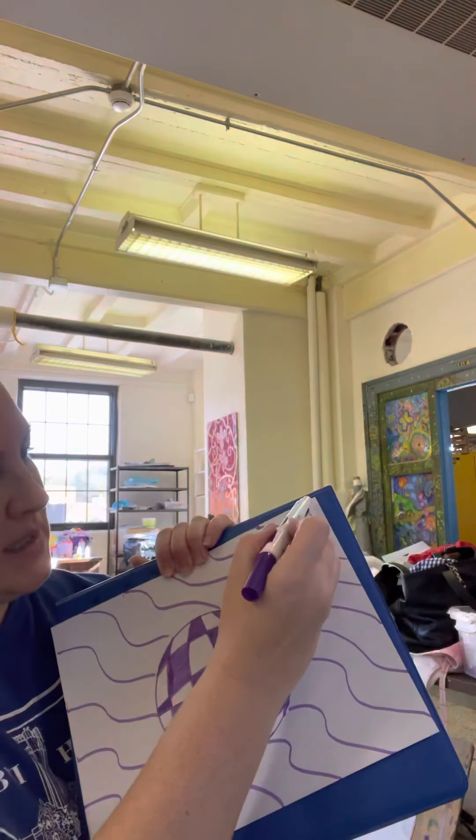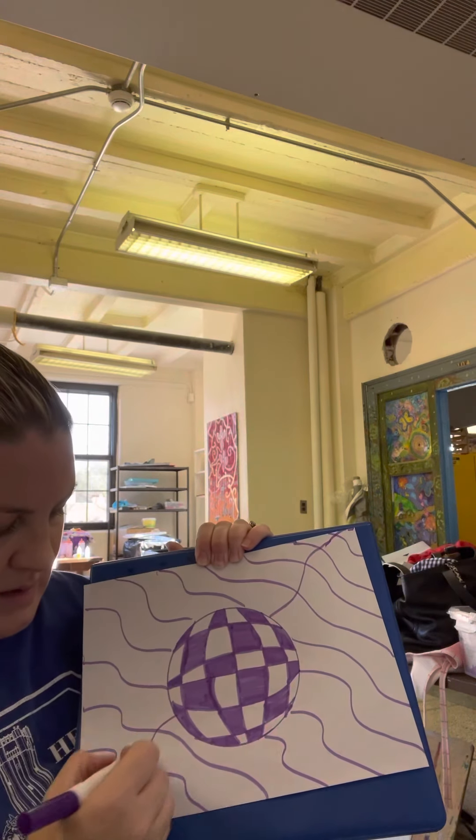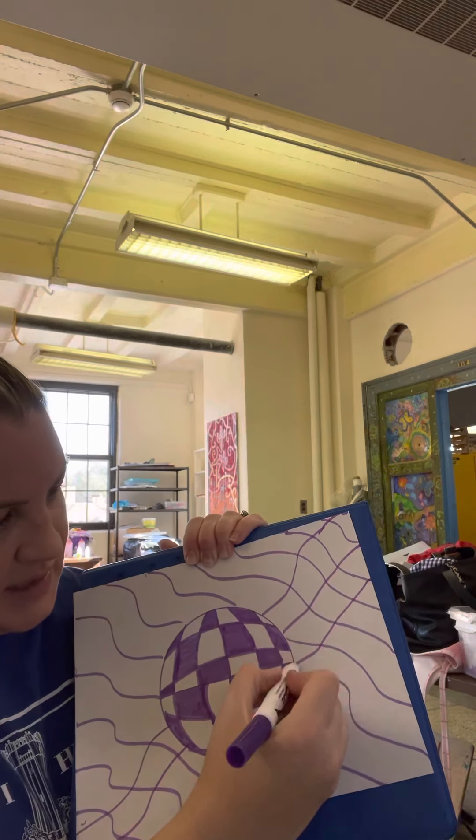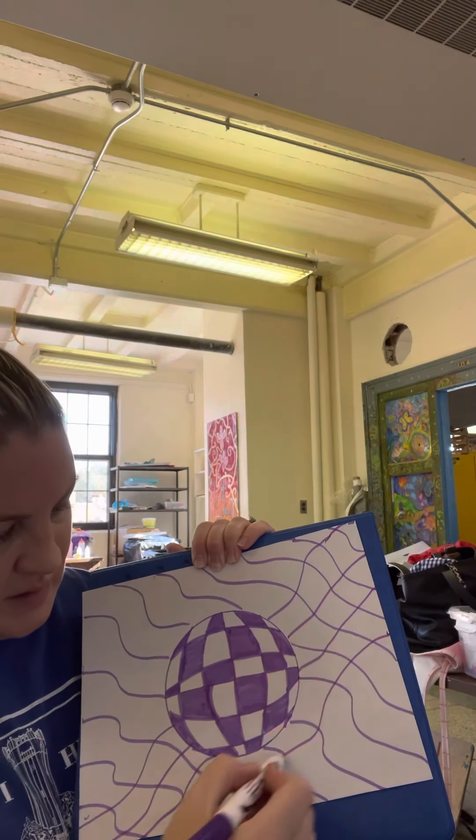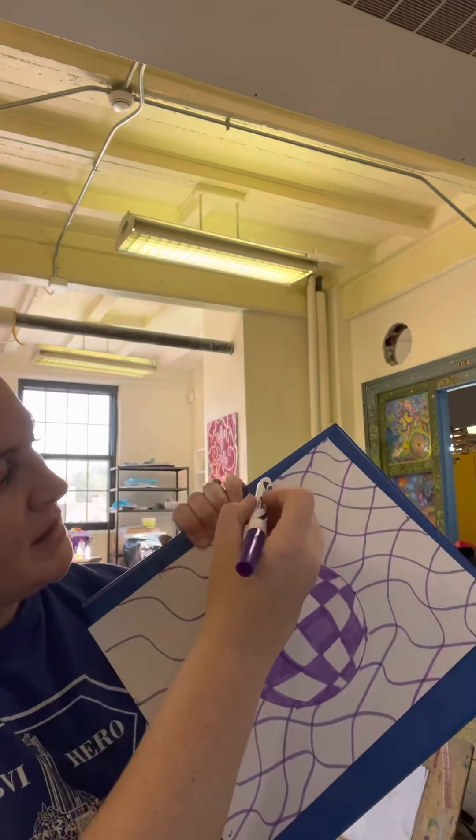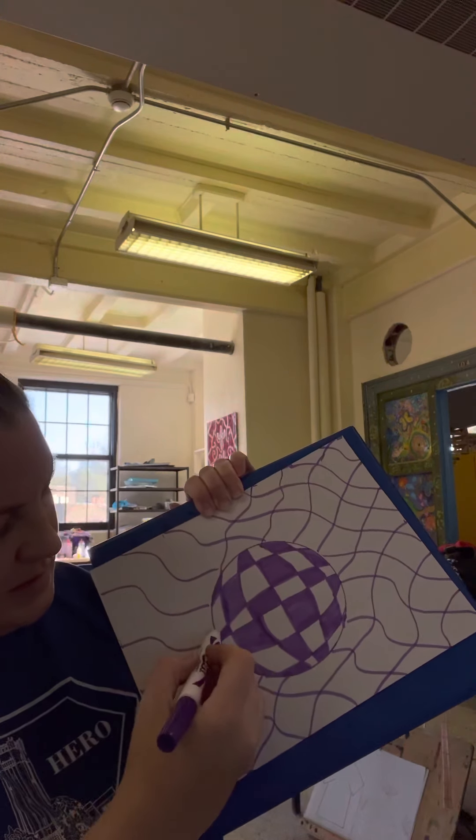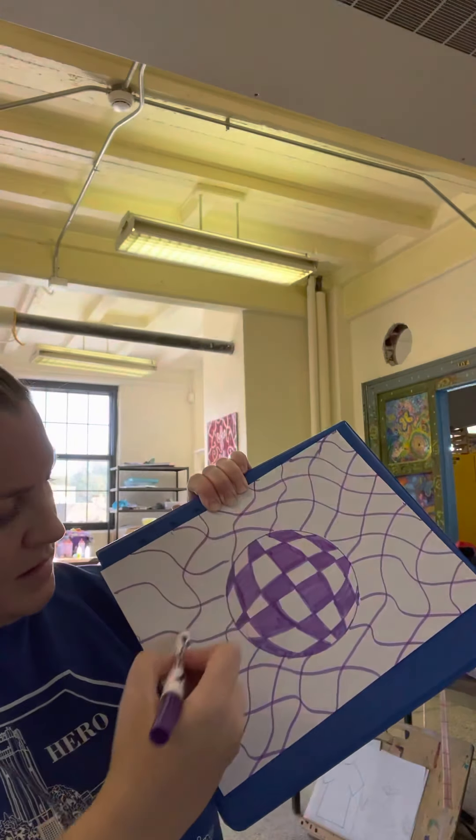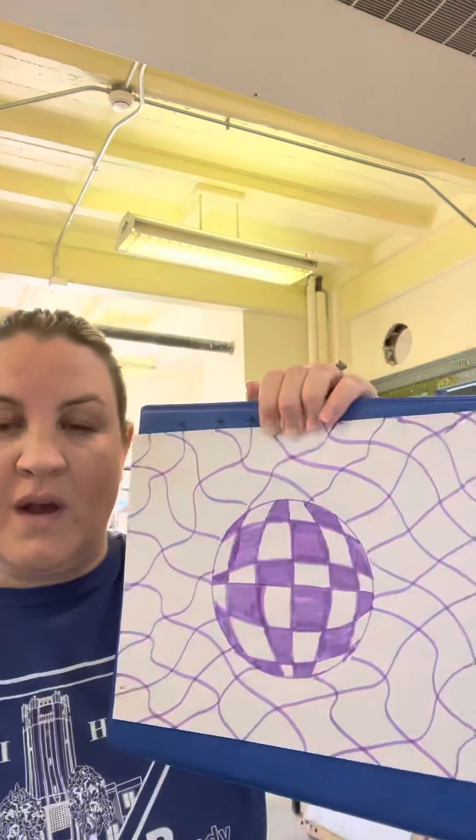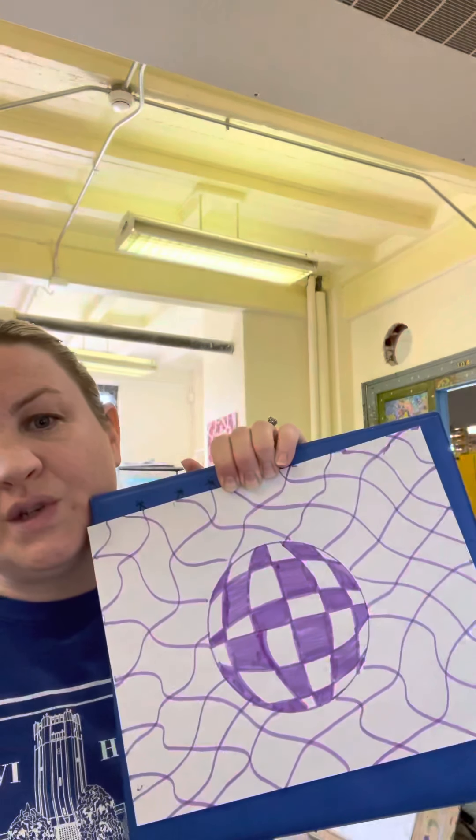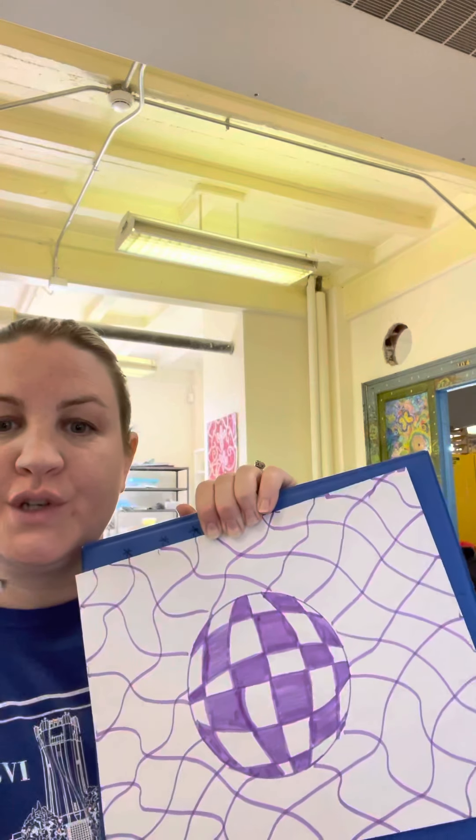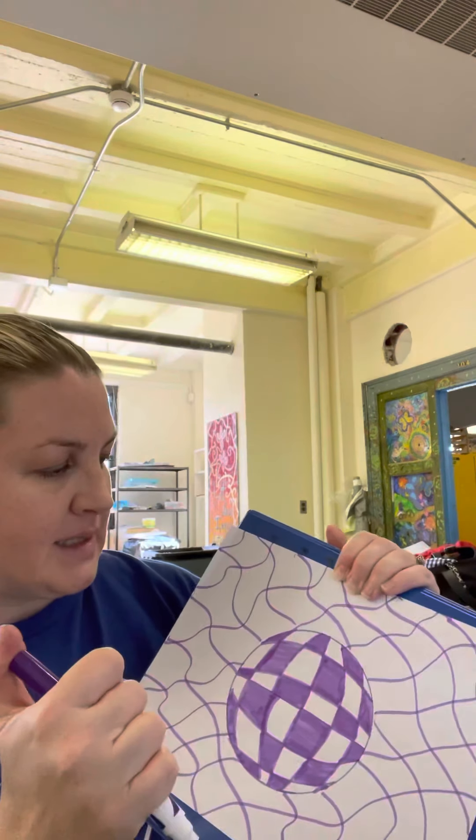So, then I just need to go across it and make some other blocks that I need to do my checkerboard in. So, I'm just going across, do diagonal. So, then you have a couple choices. Do you want to change the colors in your background, or do you want to use the same colors? So, that's up to you.